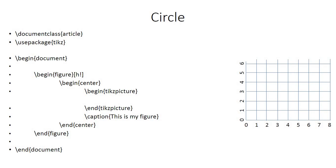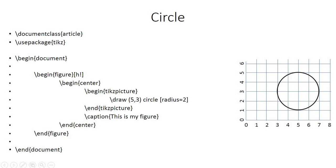Next let's draw a circle. The code for a circle is a bit different from straight-line shapes because a circle is not composed of straight lines. You need two things: the coordinates of the center point and the radius. Suppose the center is at (5, 3) — x=5, y=3 — and the radius is 2. The command will be \draw (5,3) circle (2); and this will draw a circle of radius 2 centered at (5, 3).